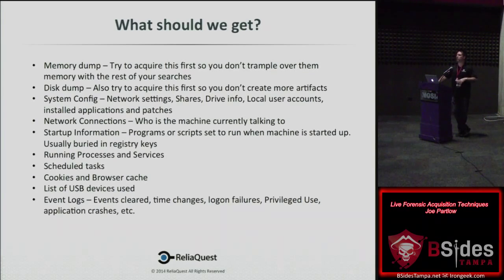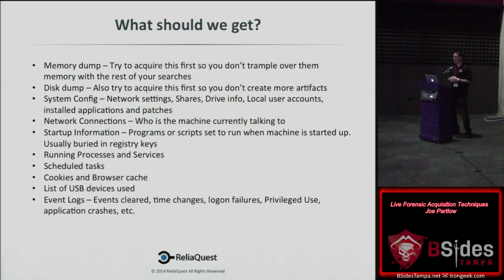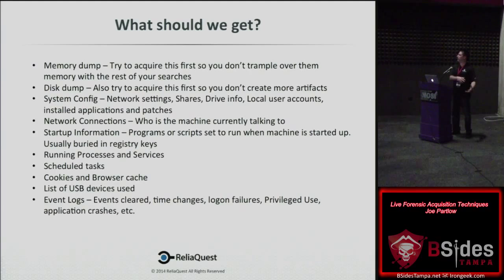When doing a live acquisition on Windows, prioritize the memory dump first — anything you do or any commands you run will alter memory a little. Dump it first using something like DumpIt, which can dump 4 GB in a couple minutes. Then get the disk dump if you have time. Also capture system config: network settings, open shares, attached drives, local users, installed applications, and last patch date — this helps you build a timeline later.